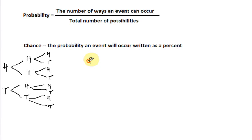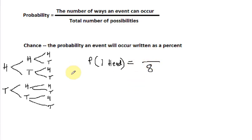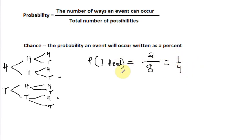Let's look at what is the probability that I flip and get exactly one head. We know that the total number of possibilities is eight. We just have to look through our list and count how many have exactly one head. It's going to be when we have head-tail-tail, or tail-tail-head — so we have two out of eight for the probability. That reduces to one-fourth. The chance is one divided by four, which is 25 percent.